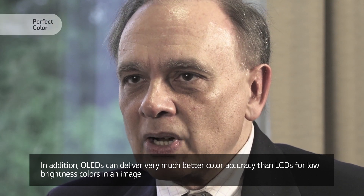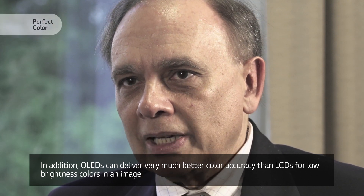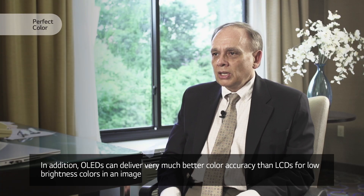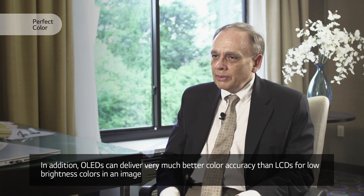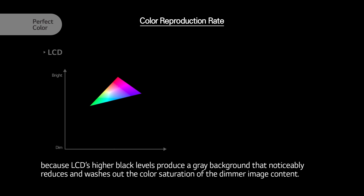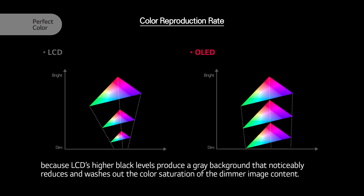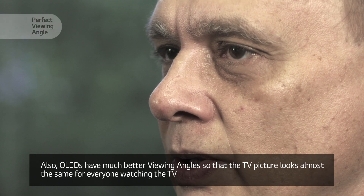In addition, OLEDs can deliver very much better color accuracy than LCDs for low brightness colors in an image, because LCDs' higher black levels produce a gray background that noticeably reduces and washes out the color saturation on the dimmer image content.